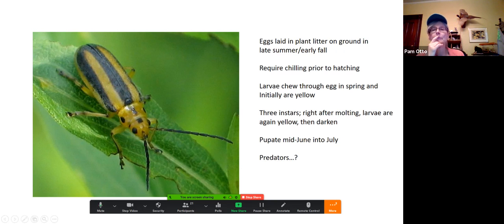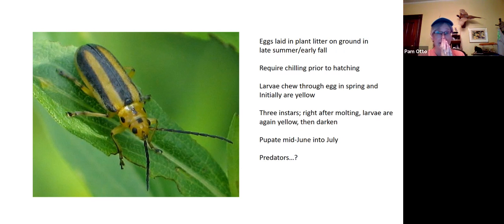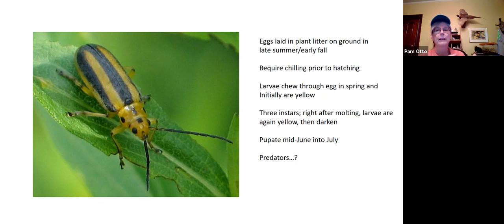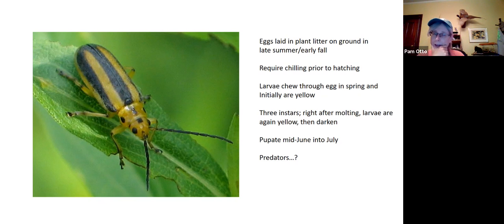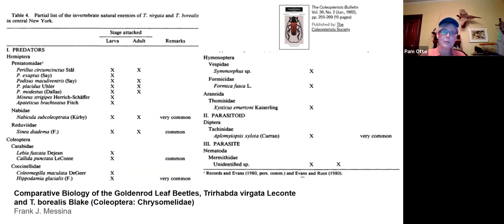The adult females emerge in midsummer, continue feeding on the plant, and then lay eggs which must overwinter — the eggs need to get cold or they won't hatch. They come out again in spring and go through only three development phases, or instars, before they pupate. With so many out there on goldenrod plants, do they have any predators?